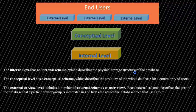The purpose of the three-schema architecture is to separate the user application and the physical database. The internal level has an internal schema which describes the physical storage of the database, using a physical data model and describing complete details of data storage and access paths. The conceptual schema describes the structure of the whole database for a group of users, hiding the details of physical storage and concentrating on describing entities, data types, relationships, users, and other things.